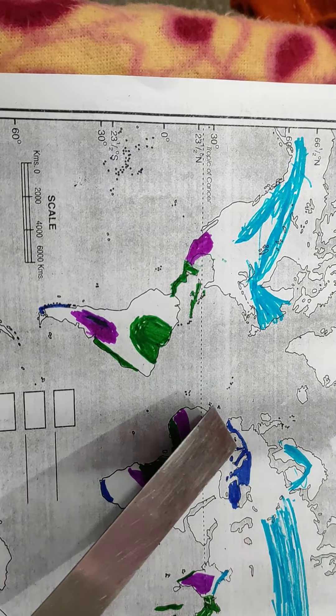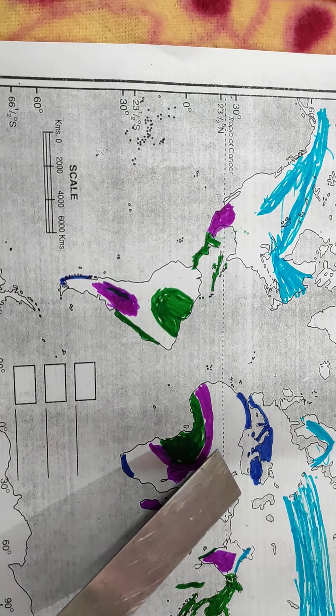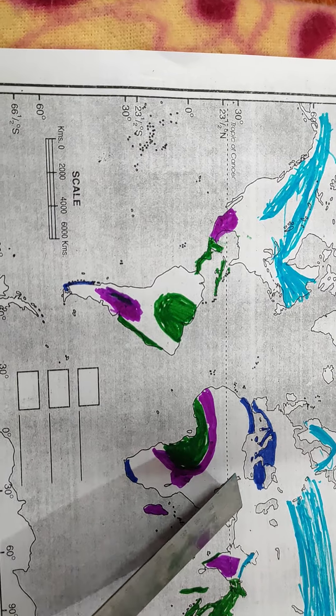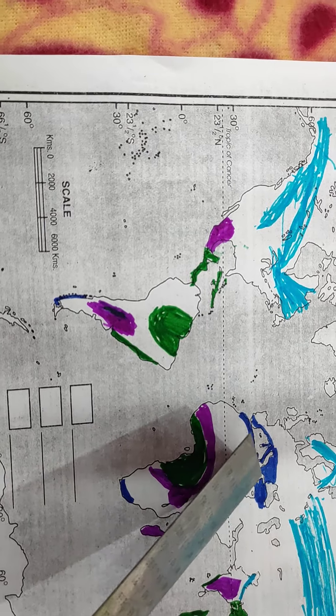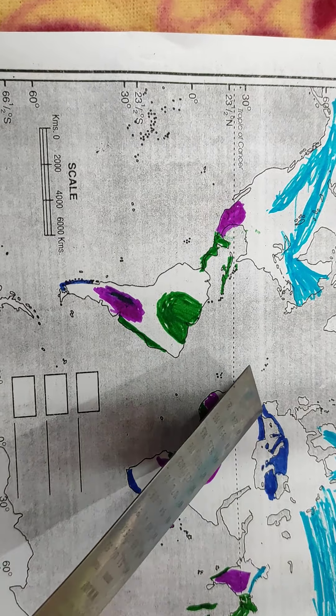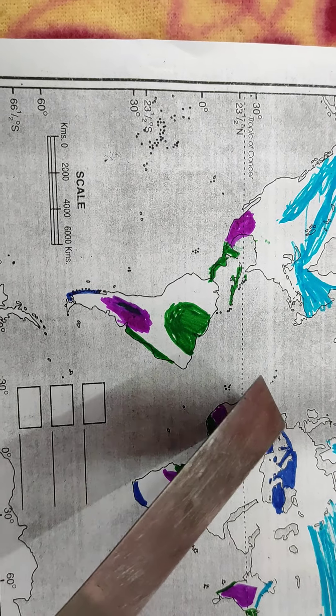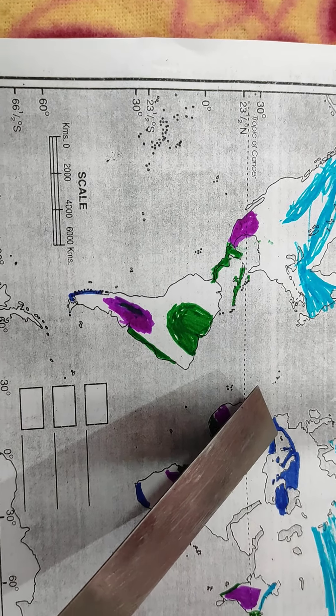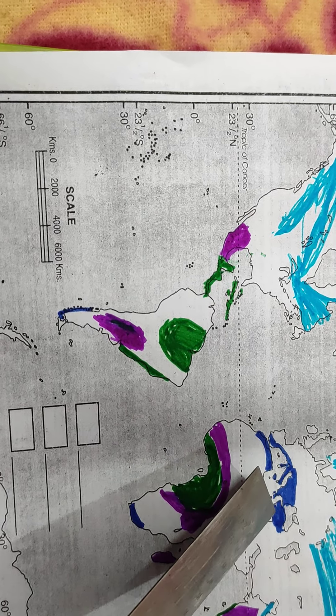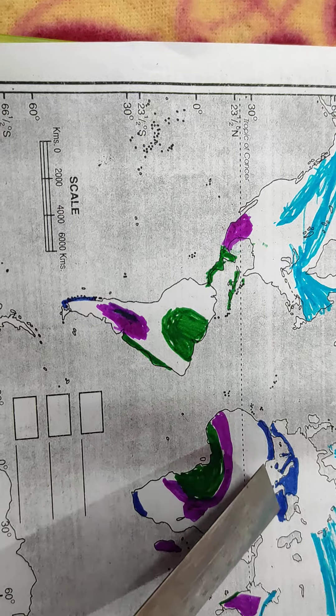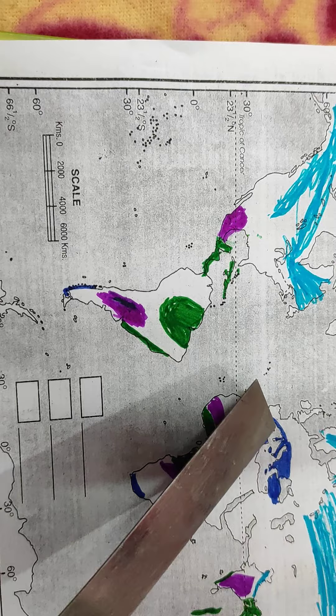Now see this - this is European continent, this is Africa, and this is Asia, you know. Arabian countries, you know. And in between is Mediterranean Sea. Mediterranean Sea's all four sides